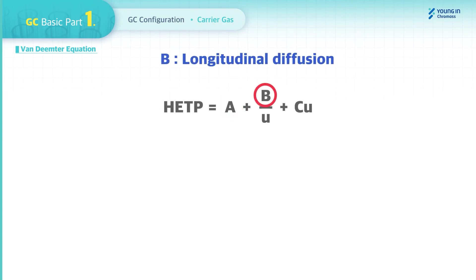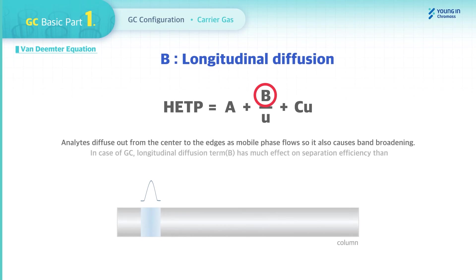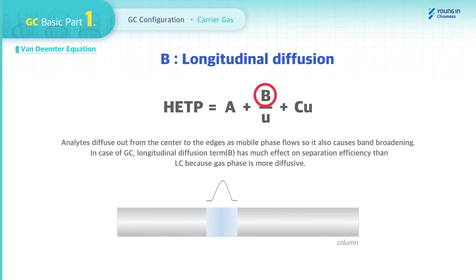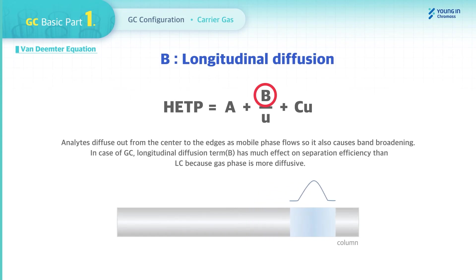Second, Term B — longitudinal diffusion. Analytes diffuse out from the center to the edges as the mobile phase flows, which also causes band broadening. In the case of GC, longitudinal diffusion (Term B) has much more effect on separation efficiency than in LC because the gas phase is more diffusive.